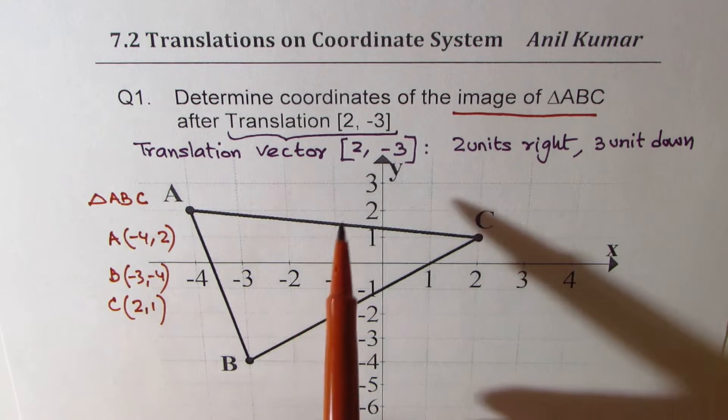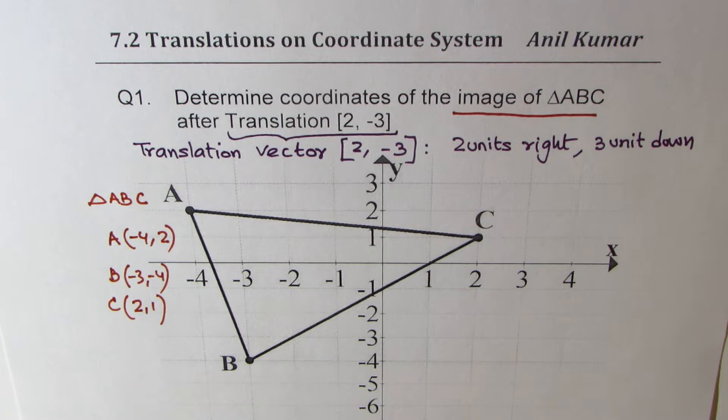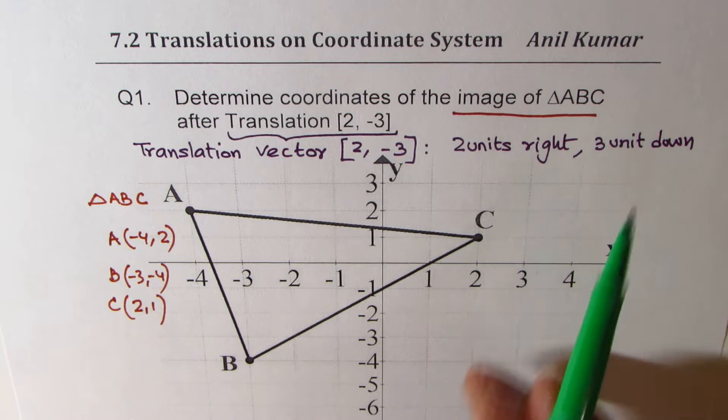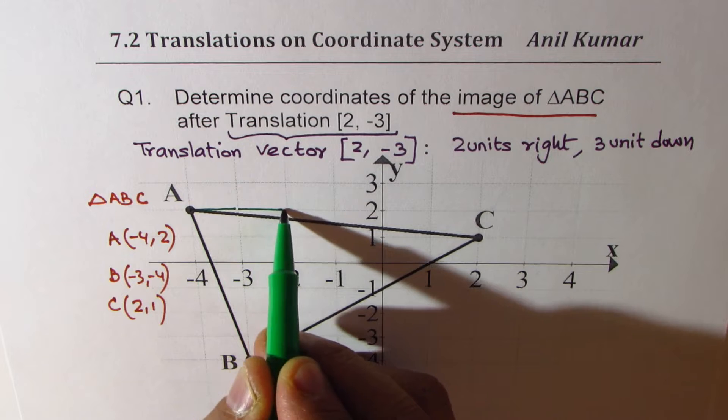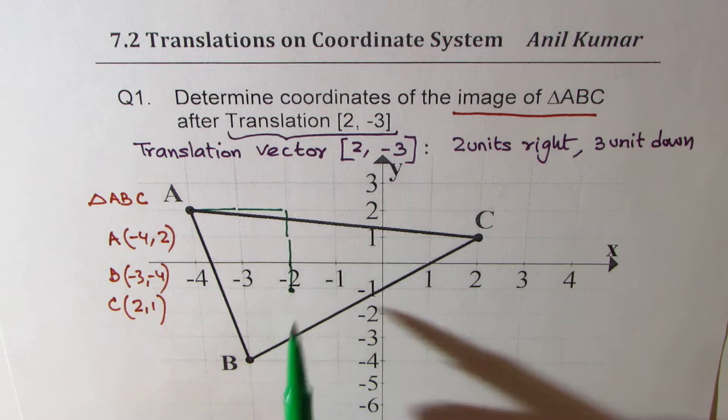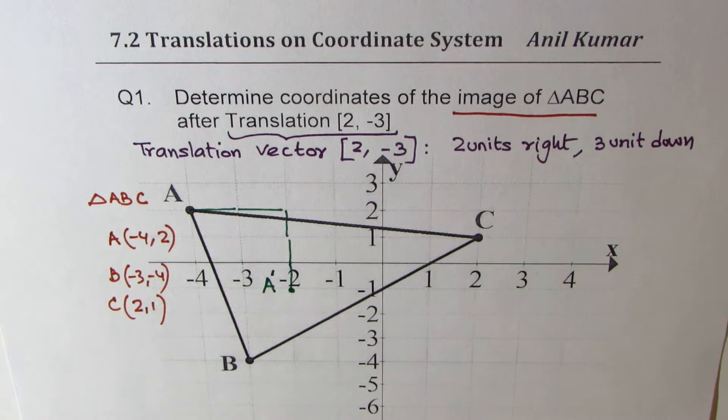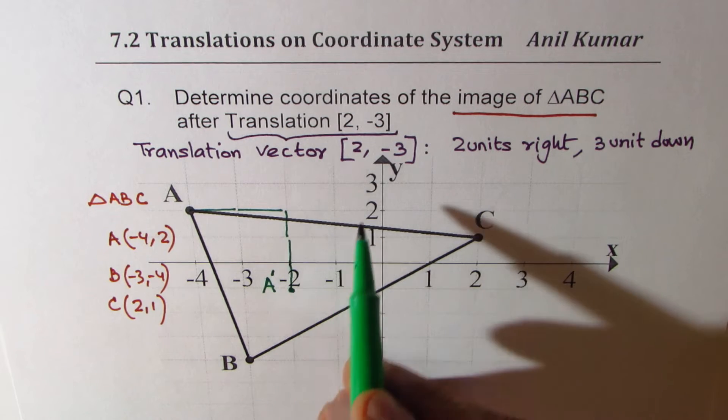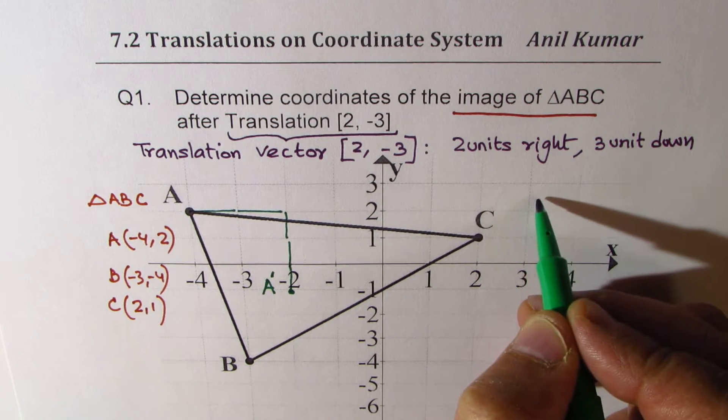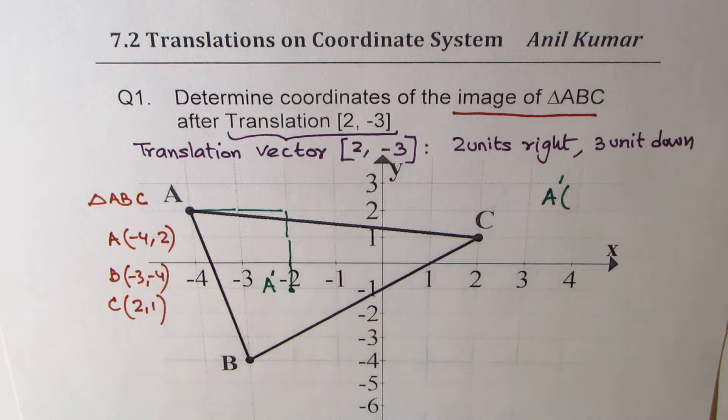On this we have to perform the translation using the translation vector [2, -3]. That is to say that we have to move each part two units to the right and three down. So for example A will move to one, two right and three down. One, two, three. So this will be the point A, the image of A. You get the idea. And all the image points should be labeled with the same letter but with a dash on the top. So that becomes the image. So let me write down this image point. We are bringing things down, so A' will be at (-2, -1).